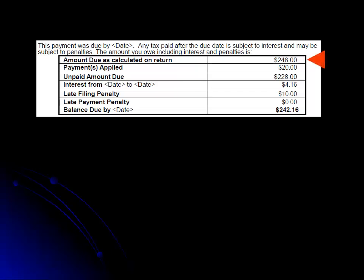This includes the original tax due amount, any partial payments that were applied, the interest, a late payment penalty, and, if applicable, a late filing penalty. The total amount due and the due date are in the bottom row of the table.